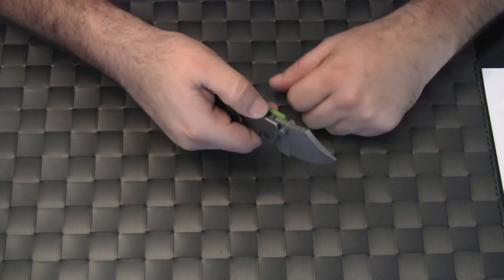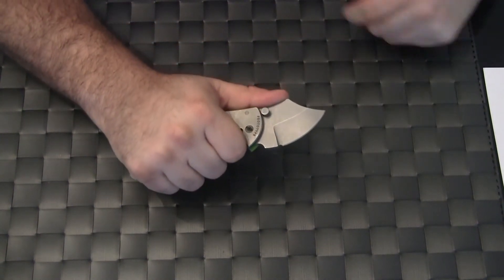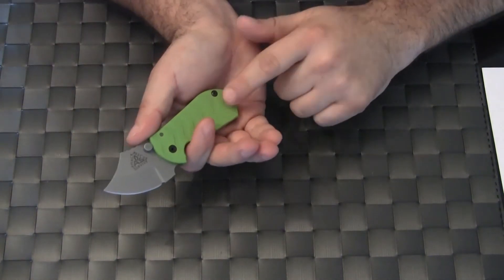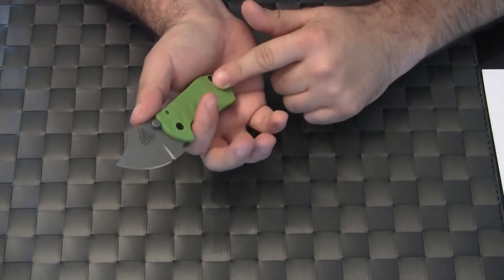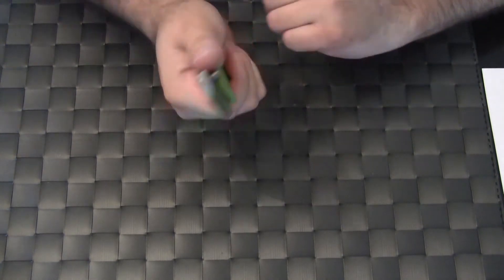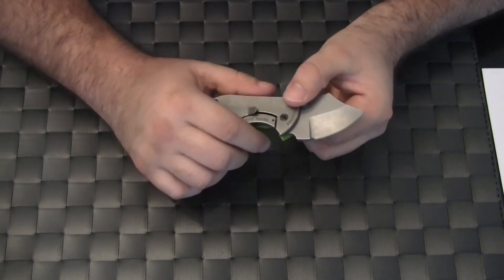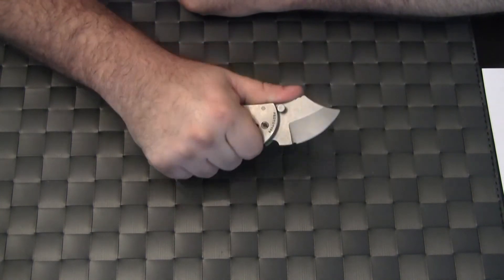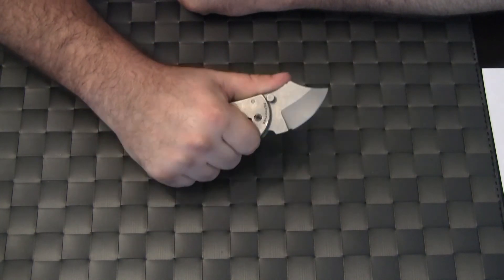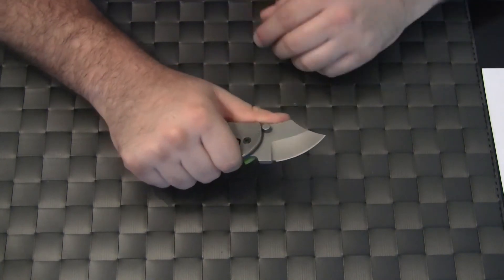You can see some aggressive jimping on the back. It is really good. When I hold this knife, the base of the handle fits right into the palm of my hand, and so I get a really good grip. The contour right here is really nice. It is a perfect place for it. I feel like I get a lot of control over this blade. Even though it is small, a lot of control. It is really great.